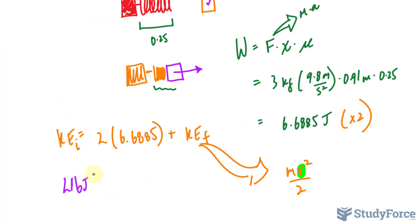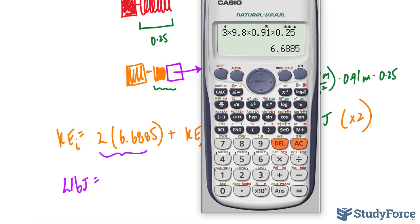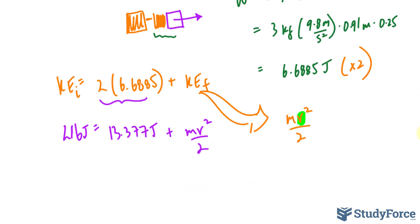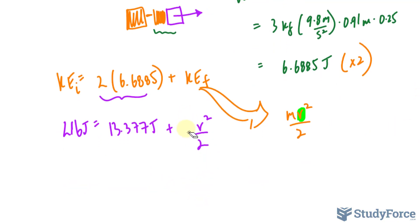216 joules is equal to the product of those two numbers, so that multiplied by 2, that's 13.377 joules, plus mv squared over 2, where m will be replaced with 3 kilograms.